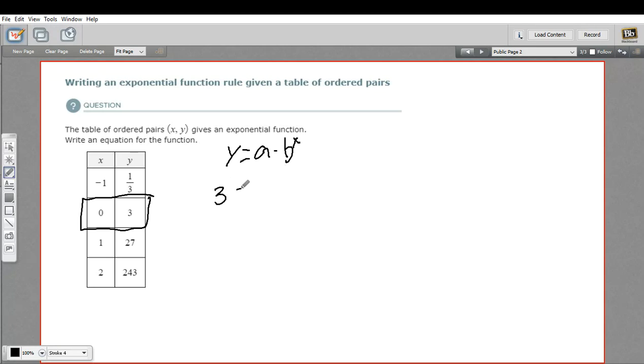Here the y is 3, so I'll put in a 3 for y. We don't have a yet. We don't have b yet. But b is raised to the 0 power. That's helpful because anything raised to the 0 power is just the number 1. So this is 3 equals a times 1, or just a equals 3.